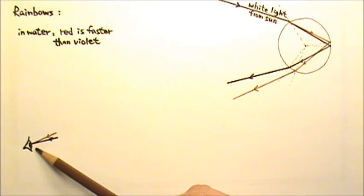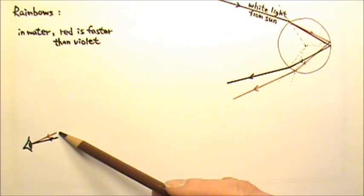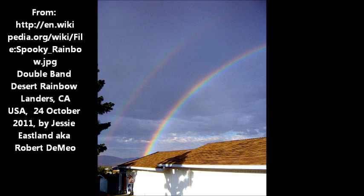For an observer on the ground, red ray being steeper means red is seen higher up. So when you see rainbows in the sky, you would see red on top and violet below. And occasionally you may see a faint secondary rainbow above the primary rainbow in the sky.